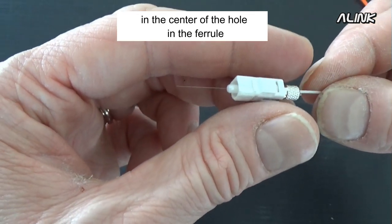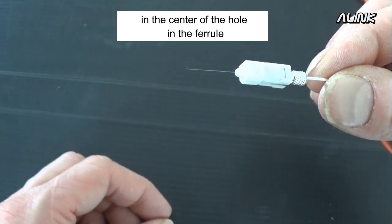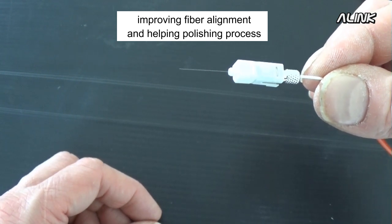The fiber will be moved into the center of the hole in the ferrule, improving fiber alignment and helping the polishing process.